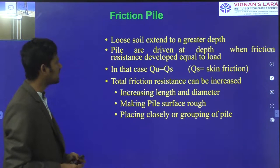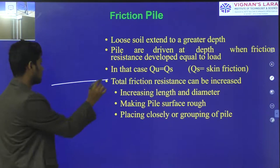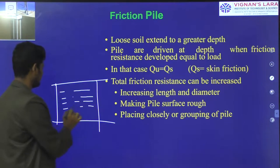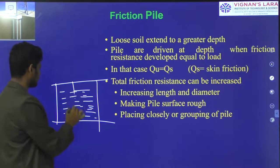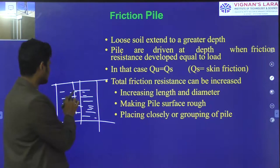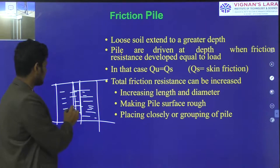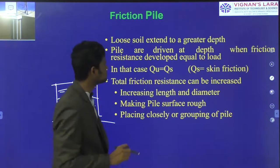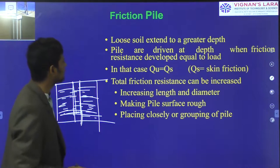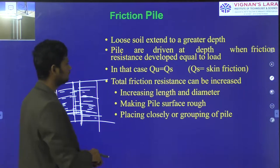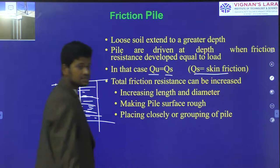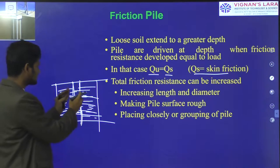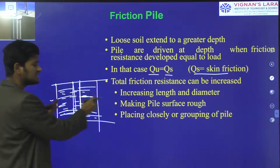Next, we are having the friction pile. Where loose soil extends to a greater depth, and the soil available here is weak soil strata, in this weak soil strata if you want to construct any structure foundation, we provide friction piles. Friction piles distribute the load through the surrounding soils. Piles are driven to a depth where the friction resistance developed equals the load. In that case, QU equals QS, where QS equals skin friction.